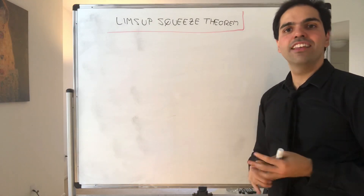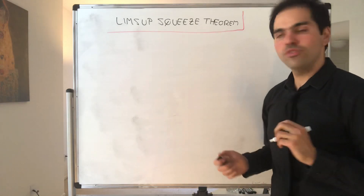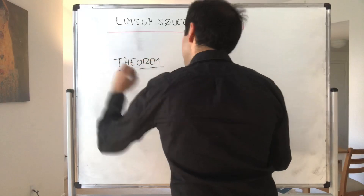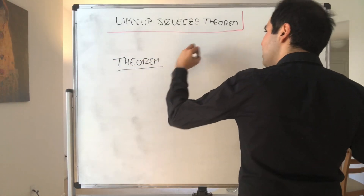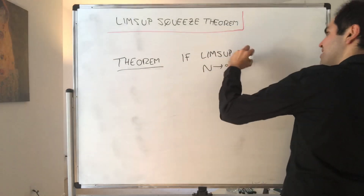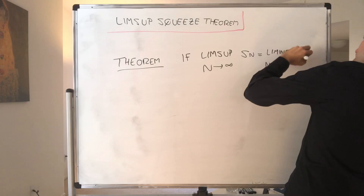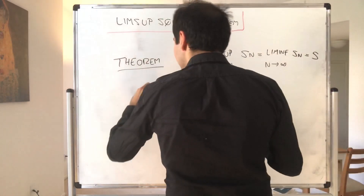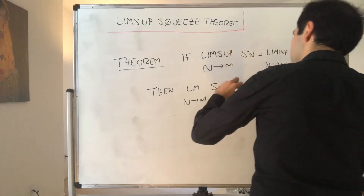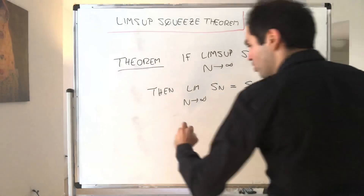Today we'll discuss a very elegant criterion for a sequence to converge, which I like to call the Lim-Sup Squeeze Theorem. Here's what it says: suppose that the lim-sup and the lim-inf of a sequence coincide — suppose lim-sup of Sn equals lim-inf of Sn, and it equals S. Then this forces the whole sequence to converge, so the limit of the sequence is also S.